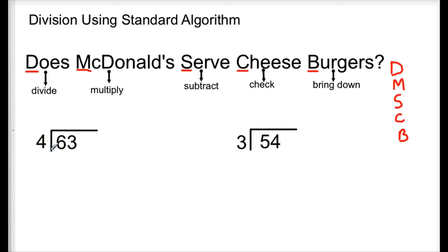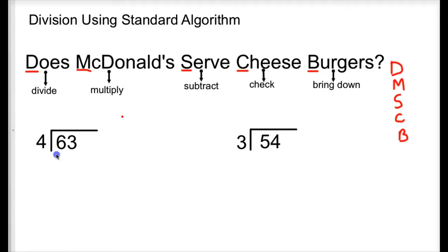So we're starting with 63 divided by 4, and today we're just going to strictly look at algorithms, computing the numbers. We're not going to involve any word problems today; we'll add those in tomorrow. Right now we're just going to get a feel of the standard algorithm. 63 divided by 4. I need to look at my divisor, 4, and I need to look at my dividend, 63.